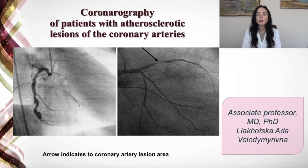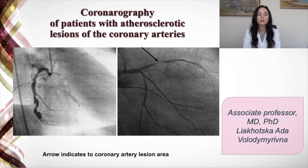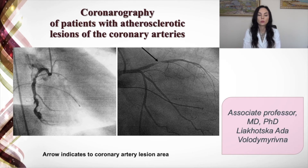The next diagnostic method is coronary angiography. Here you can see atherosclerotic lesions of the coronary arteries. An arrow indicates the coronary artery lesion area, as visible in the pictures.